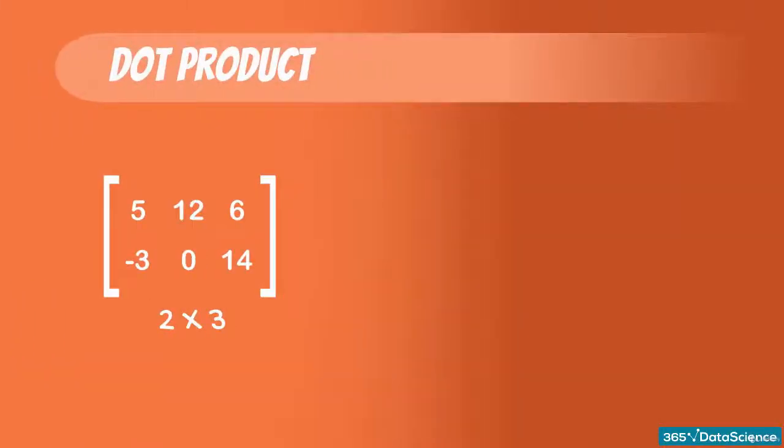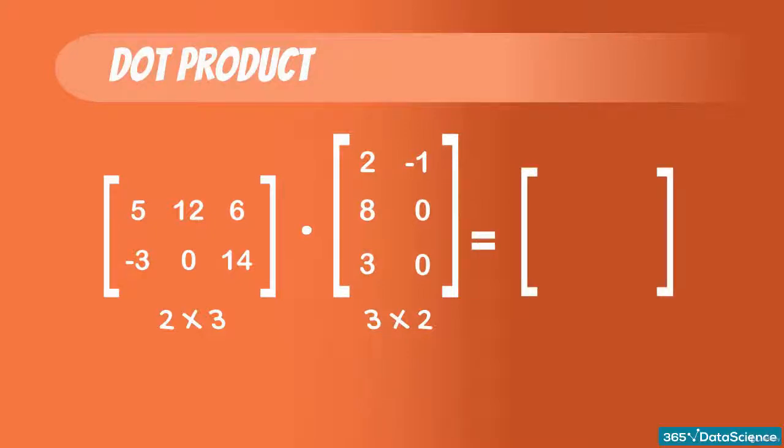Time to take the two matrices and multiply them. The first is the same one from the beginning of the example. The second will be a 3 by 2 matrix: 2, minus 1, 8, 0, 3, 0. The first thing we need to do is check their compatibility. 2 by 3 times 3 by 2. The forms are matching, so we are good to go. The next step is to find the shape of the output matrix. The matching dimension disappears, so the resulting shape is 2 by 2. Finally, we must do that multiplication itself.